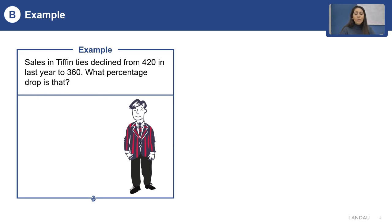Therefore, first we will have to find the actual change. To do so, let us subtract 360 from 420. This will make 60. 60 will be the actual change.